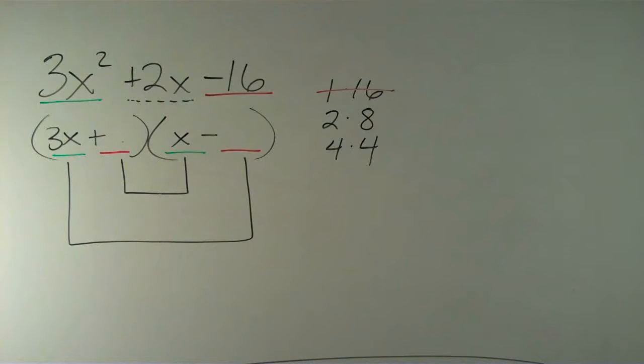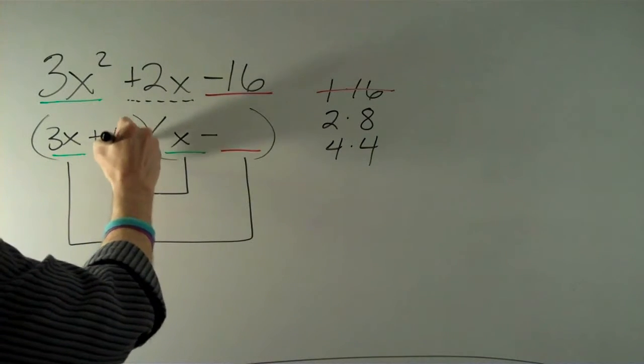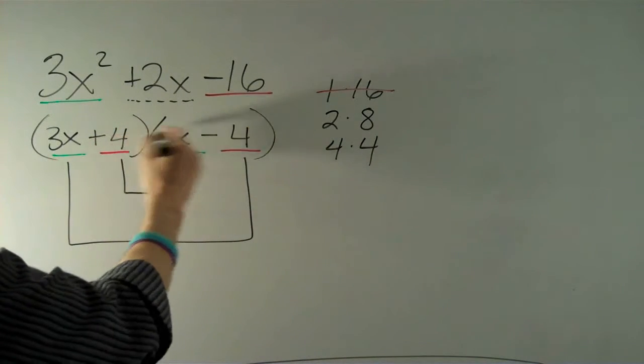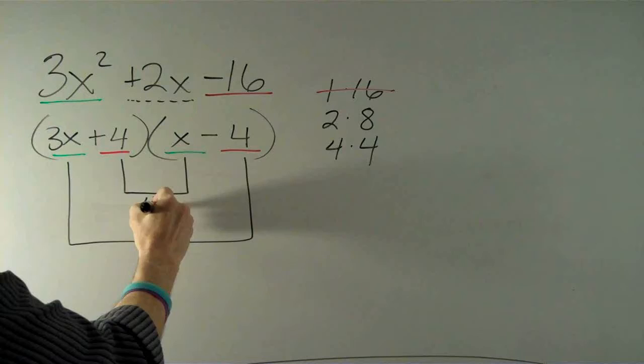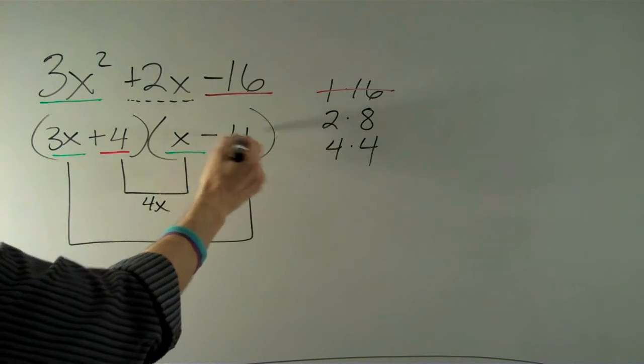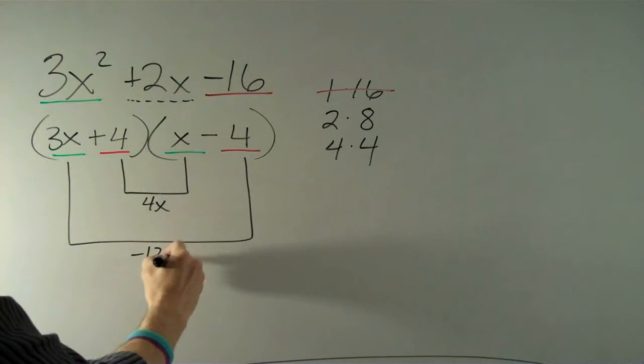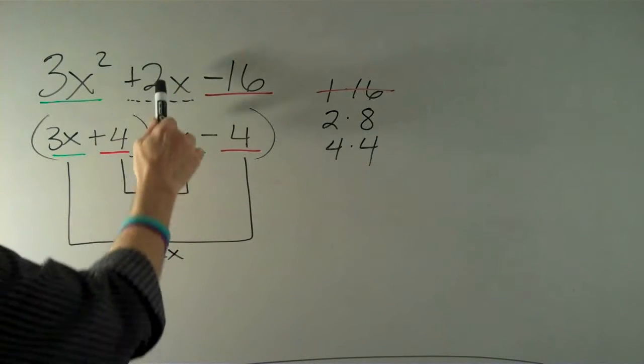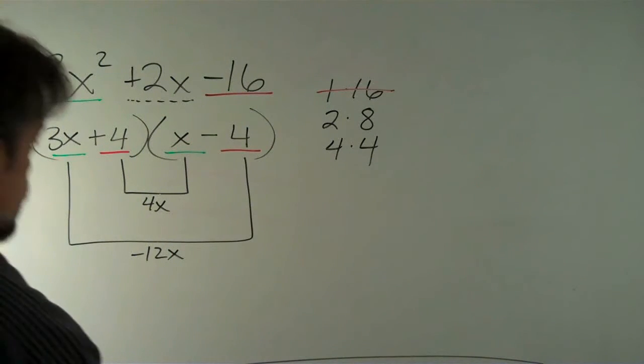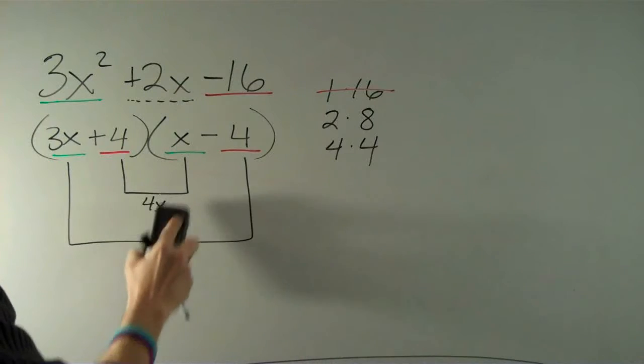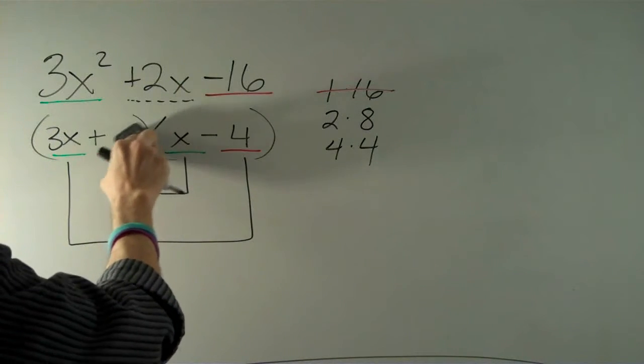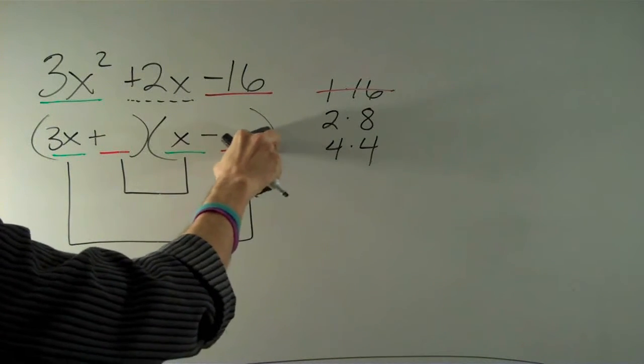So the other possibilities are going to be 2 and 8, or 4 and 4. Well let's just try one of them. Let's give 4 and 4 a shot. 3x plus 4 times x minus 4. 4 times x is 4x, 3x times negative 4 is negative 12x, and 4x minus 12x does not get us 2x. So that's not going to work either.